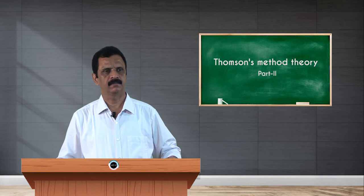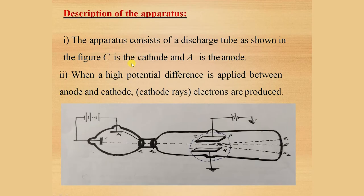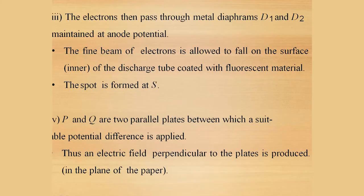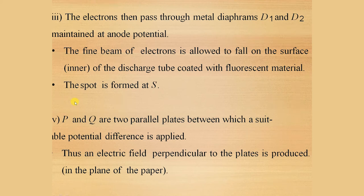The apparatus consists of a discharge tube as shown in the figure. C is the cathode and A is the anode. When a high potential difference is applied between anode and cathode, electrons or cathode rays are produced. The electrons then pass through metal diaphragms D1 and D2 maintained at anode potential. The fine beam of electrons is allowed to fall on the surface of the discharge tube coated with fluorescent material such as zinc sulfide or barium platinocyanide. When the electron beam reaches the fluorescent screen, a spot is formed at S.